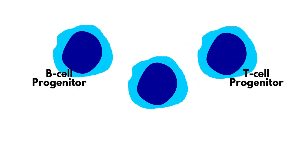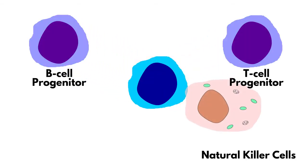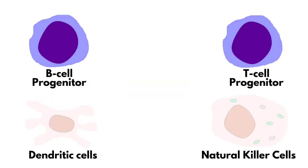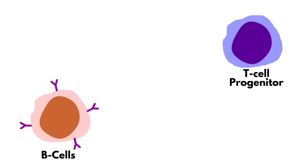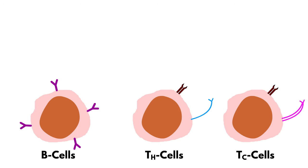Common lymphoid progenitor cells give rise to progenitors of B and T lymphocytes, natural killer cells, and some dendritic cells. B lymphocyte progenitors later differentiate into B cells, and T lymphocyte progenitors differentiate into T helper cells and T cytotoxic cells.